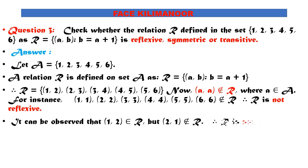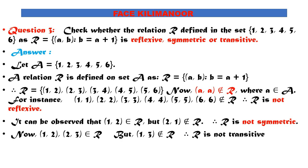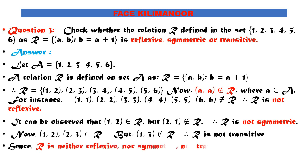The third case is transitivity. For transitivity, if a is related to b and b is related to c, then a must be related to c. (1,2) and (2,3) exist in R, so (1,3) should belong to R. But (1,3) does not belong to R. Therefore R is not transitive. Hence the relation is neither reflexive nor symmetric nor transitive.